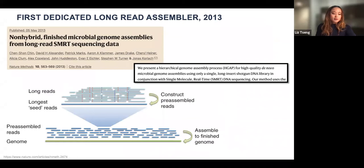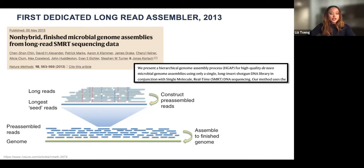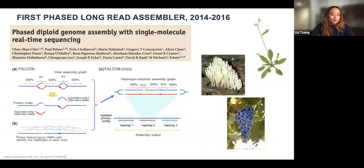Sergey and Adam's bacterial genome assembler used short reads to error correct — this was called the hybrid assembly approach. The first dedicated PacBio long-read assembler didn't come about until Jason Chin, while working at PacBio, came up with the H-gap process. The concept was to use the longest CLR reads as seed reads to align the shorter reads for error correction. These pre-assembled reads were then fed into the Celera assembler. H-gap became PacBio's first productized assembler.